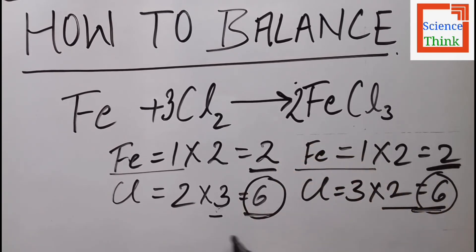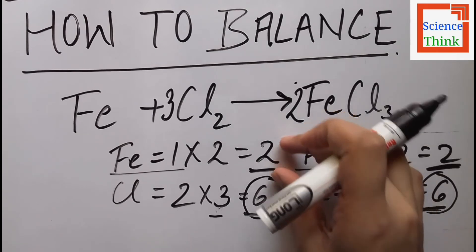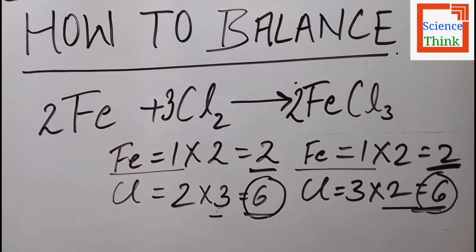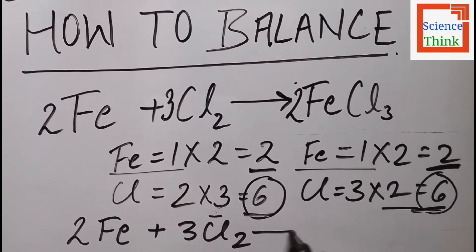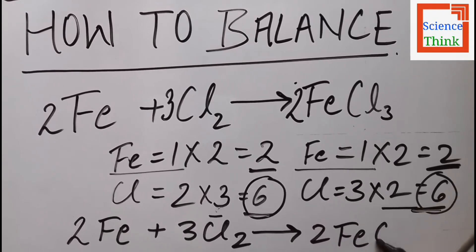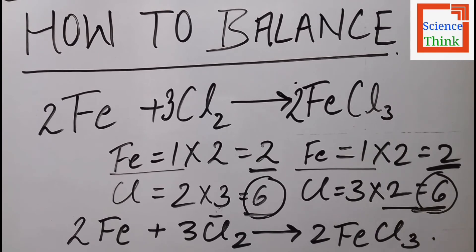The iron atoms on the reactant and product side, as well as the chlorine atoms, are both balanced. The balanced chemical equation is: 2 Fe + 3 Cl2 → 2 FeCl3. This is a quite simple method to solve this unbalanced chemical equation.